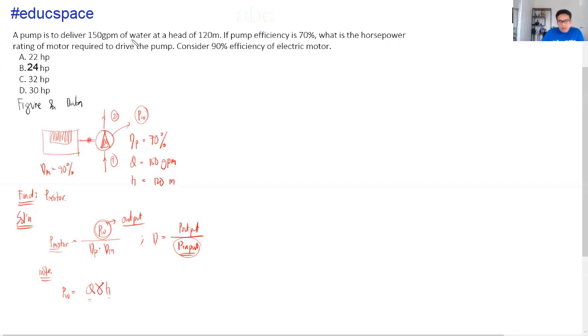So, dito binanggit na ang yung ipapump natin is H2O. So, walang binigay kung ano yung specific weight and therefore we will assume na at standard temperature siya. In that case, we will assume specific weight is equivalent to 9.8066 kilonewton per cubic meter. Again, this is the standard specific weight ng water and we have to use it. Pwede natin gamitin kapag walang binigay sa problem.